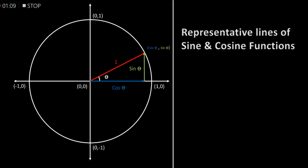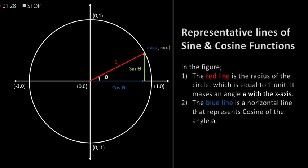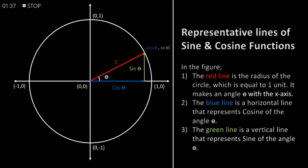Representative lines of sine and cosine functions. In the figure, the red line is the radius of the circle which is equal to one unit. It makes an angle theta with the x-axis. The blue line is a horizontal line that represents cosine of angle theta. The green line is a vertical line that represents sine of the angle theta.